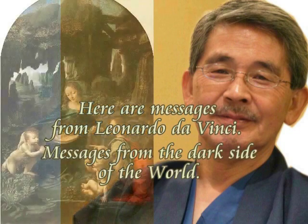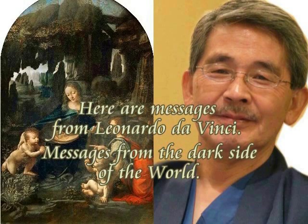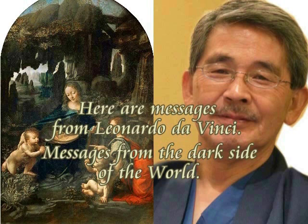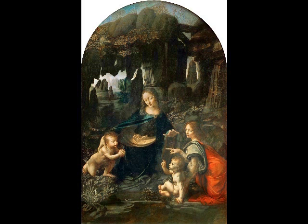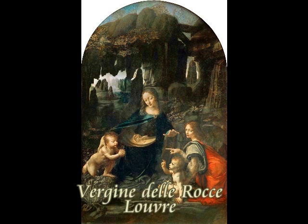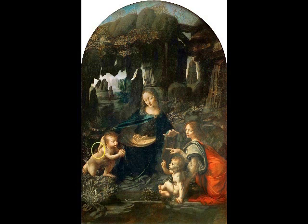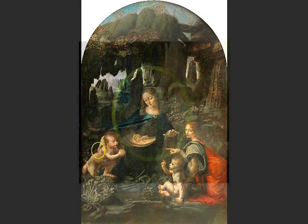ダ・ヴィンチからの十五通のメッセージを紹介します。まず第一のメッセージです。これがルーヴル版の岩窟の聖母です。この絵で最初に気になるのがマリアの右手、右指ですね。このマリアの右指がイエスの皮膚の下に潜り込んでいます。